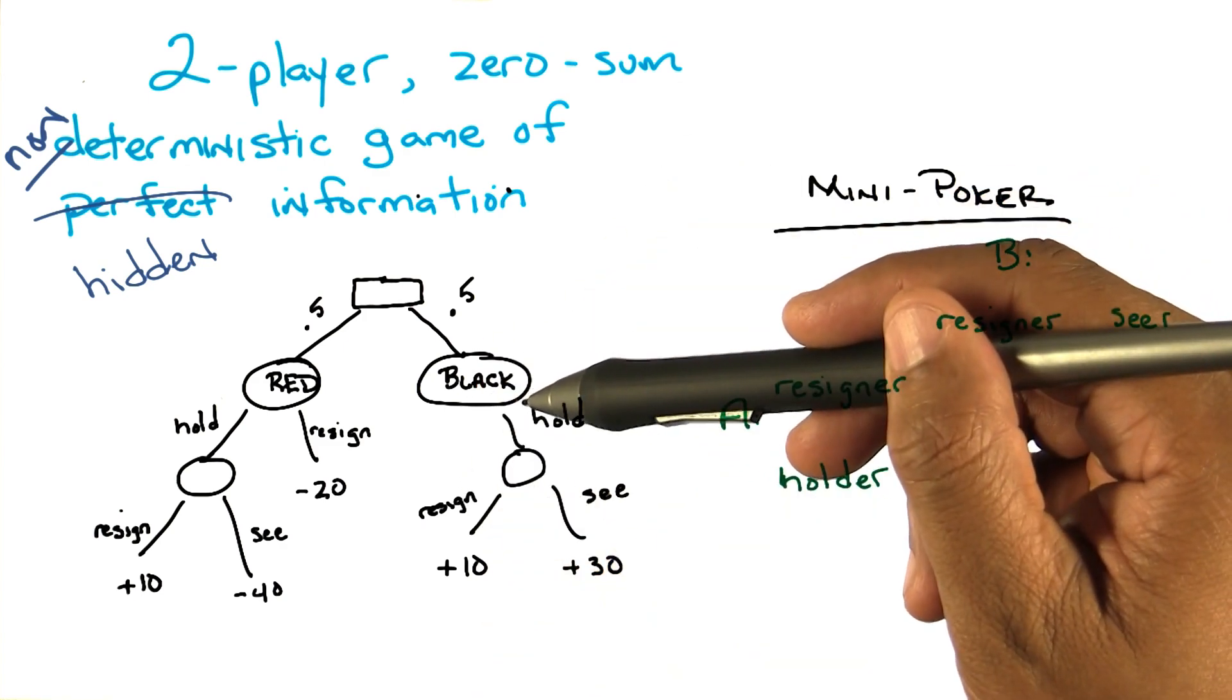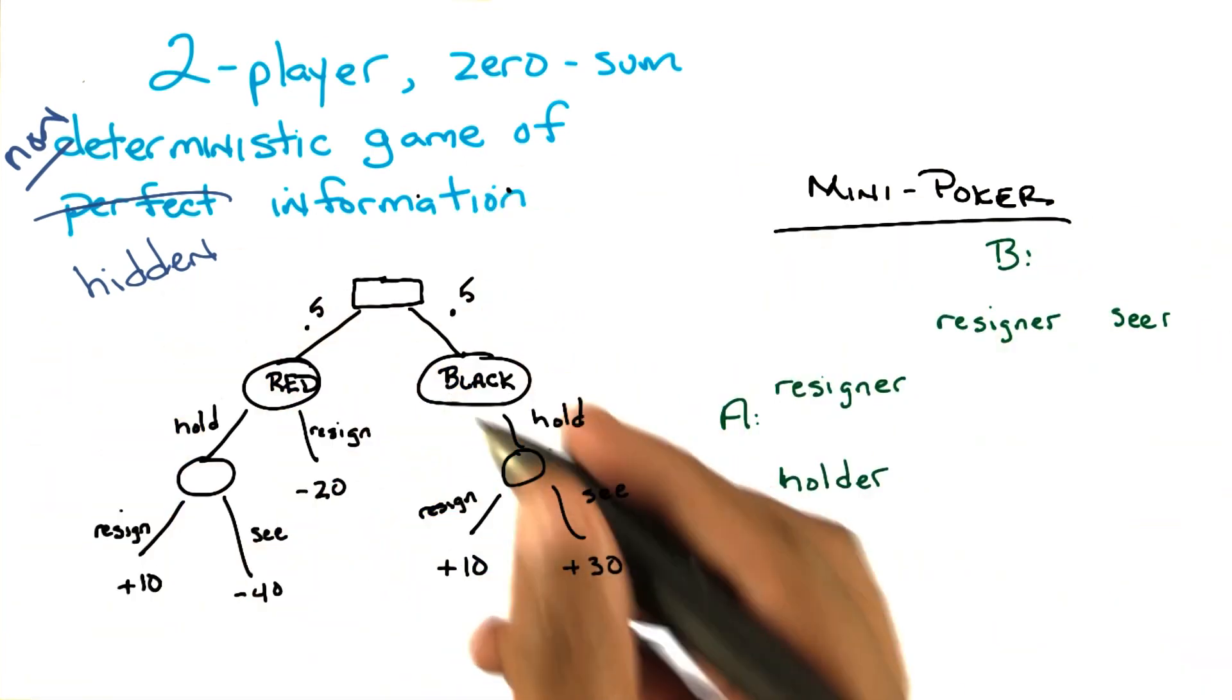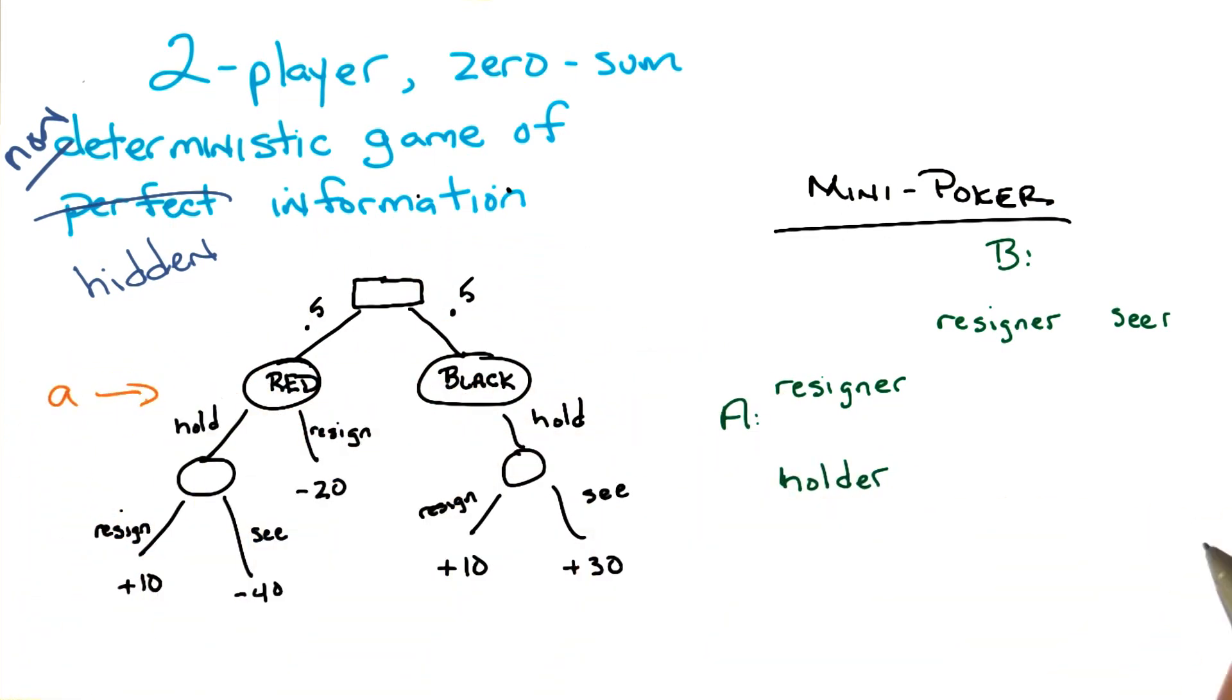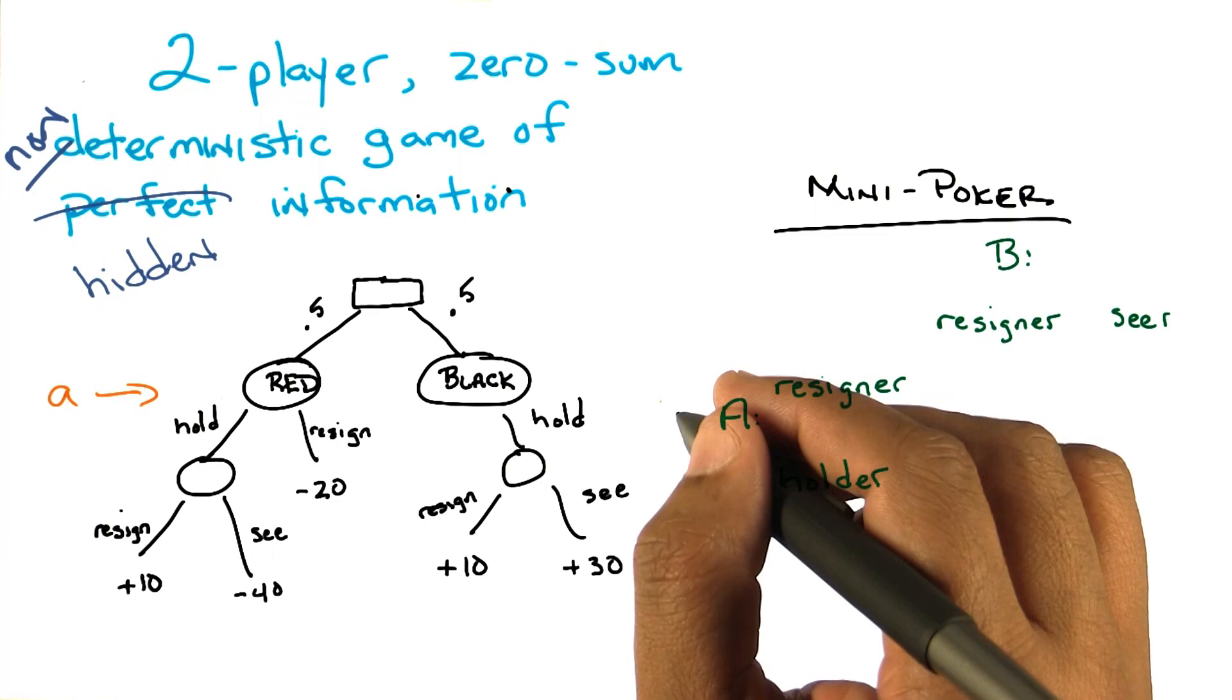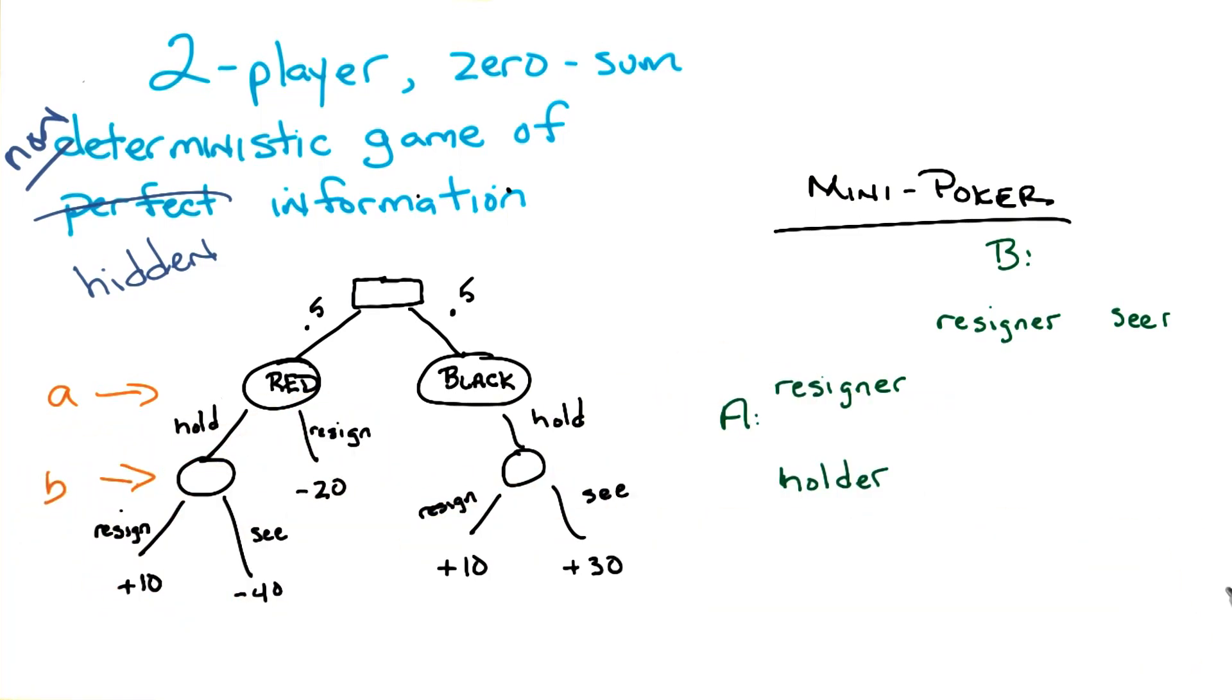If A has the black card, then B gets to choose whether to hold or not. So let me add a little bit of color for you, since you wanted some color. This is the place where A gets to make a decision. And then this is the place where B gets to make a decision.